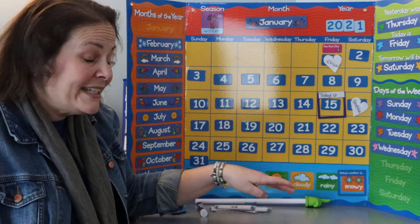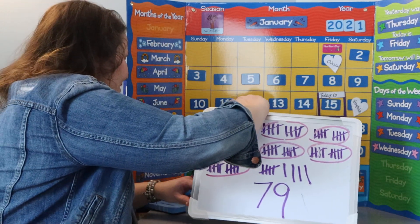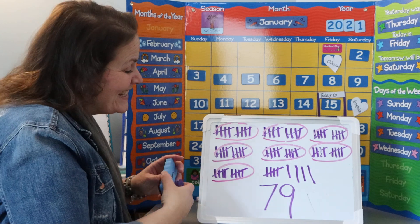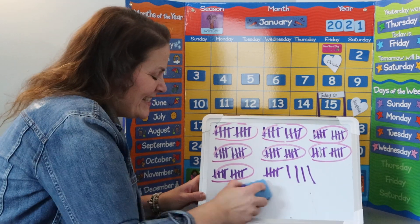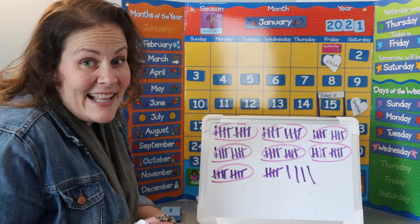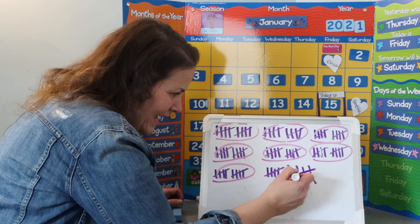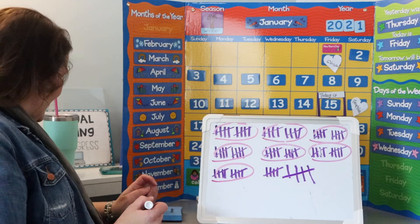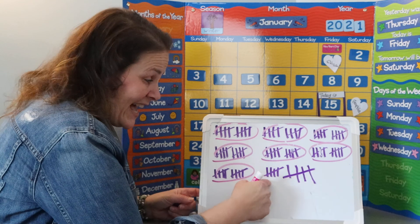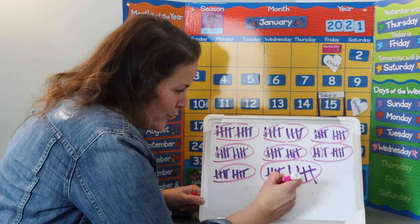Do you remember how many days we were in school yesterday? Yesterday we were in school 79 days. Today is not 79 days — today is just one more. So I have to add a tally, but I am going to do a slide five because I'm making another five group. And now what has happened? Take a look at that.